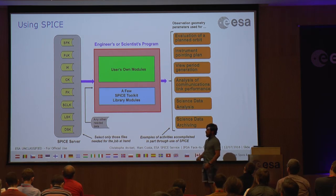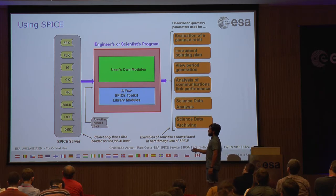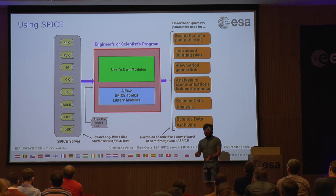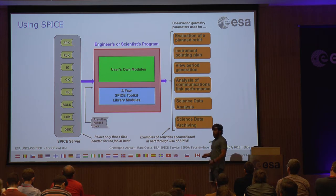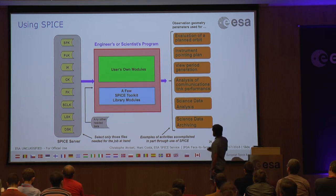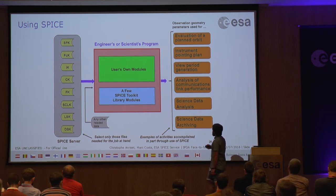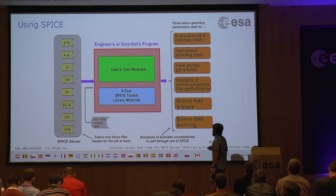The data might come as a single git repository, in the case of these planetary missions, or somewhere you'll have a list of files to load. Basically what you do is use a few of the SPICE toolkit library modules — there's a library with hundreds of APIs, and you will use a reduced set of them. With that you'll have your program, and you can evaluate the planned orbit, generate instrument pointing plans, view period generation, perform analysis of communications, and science data analysis.